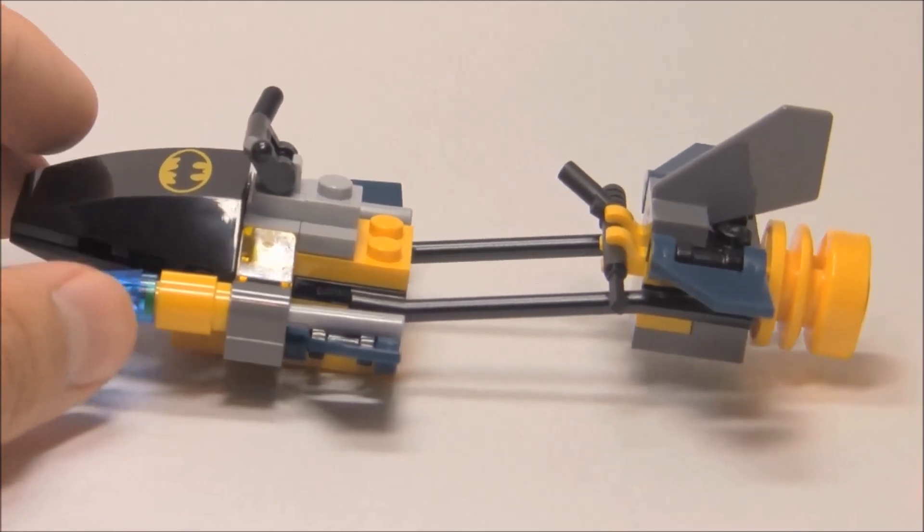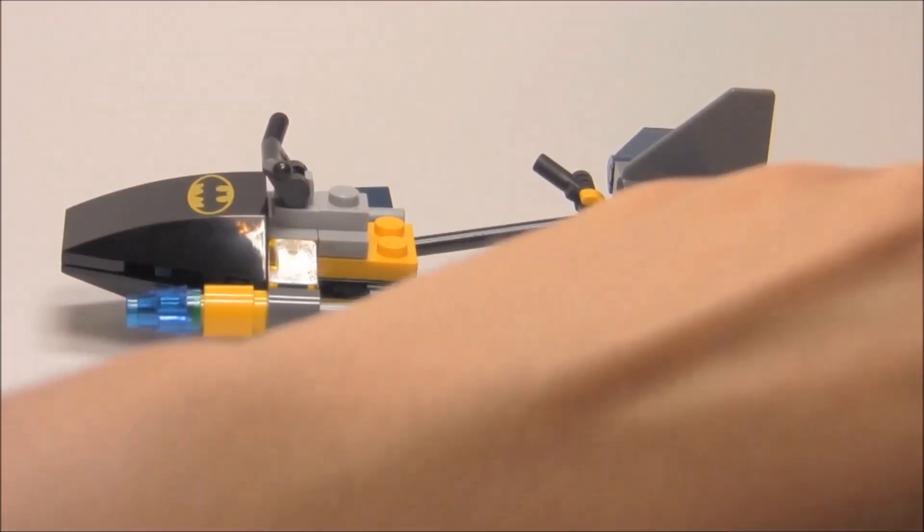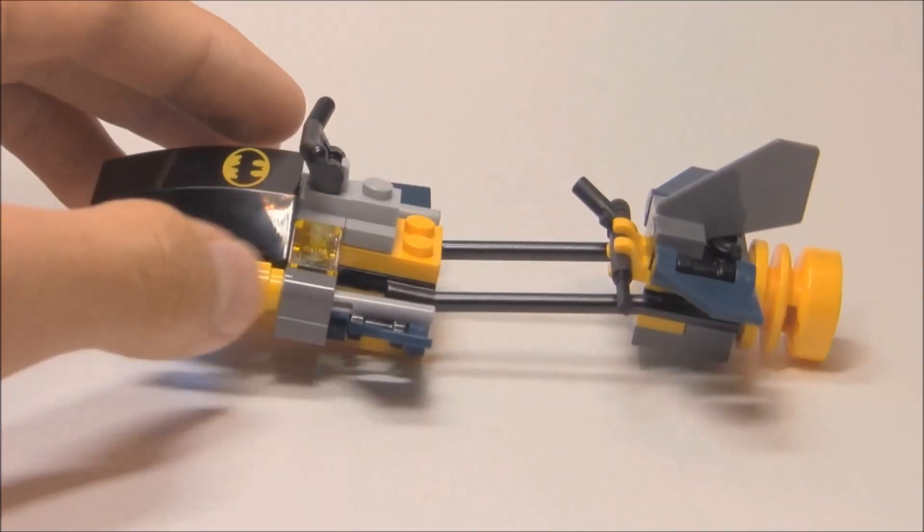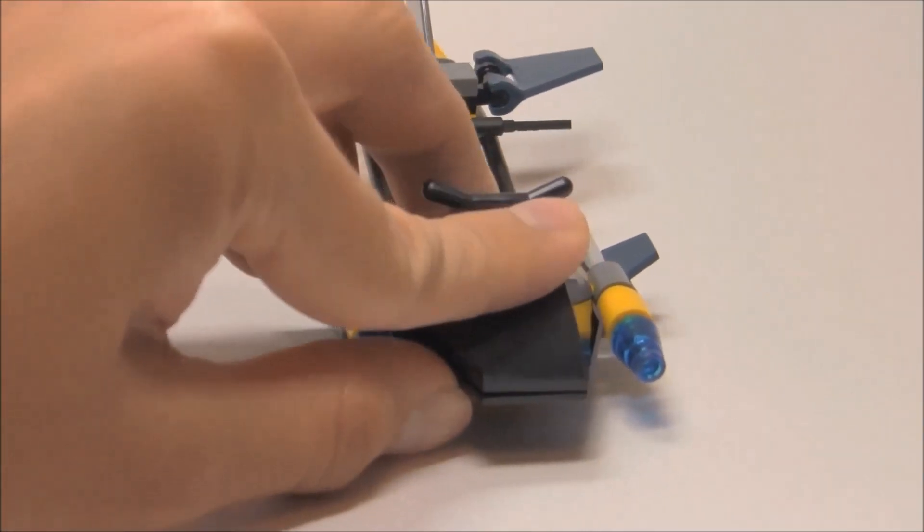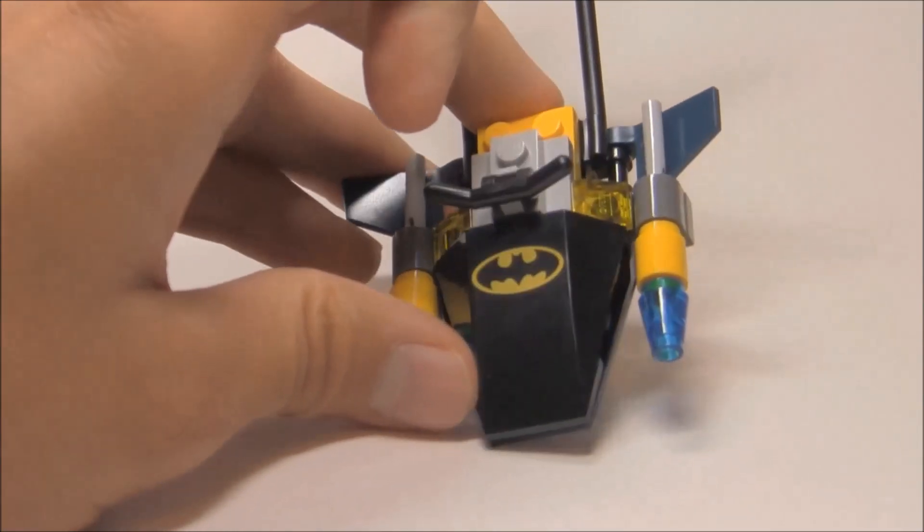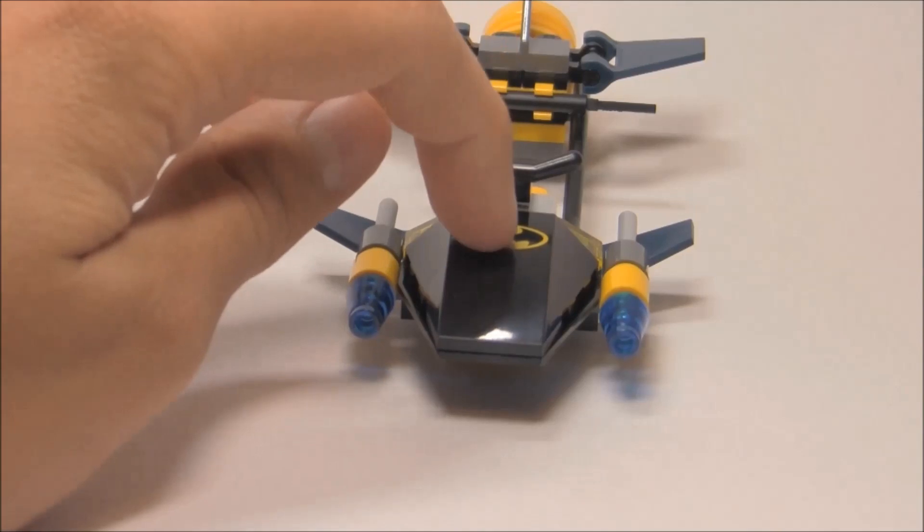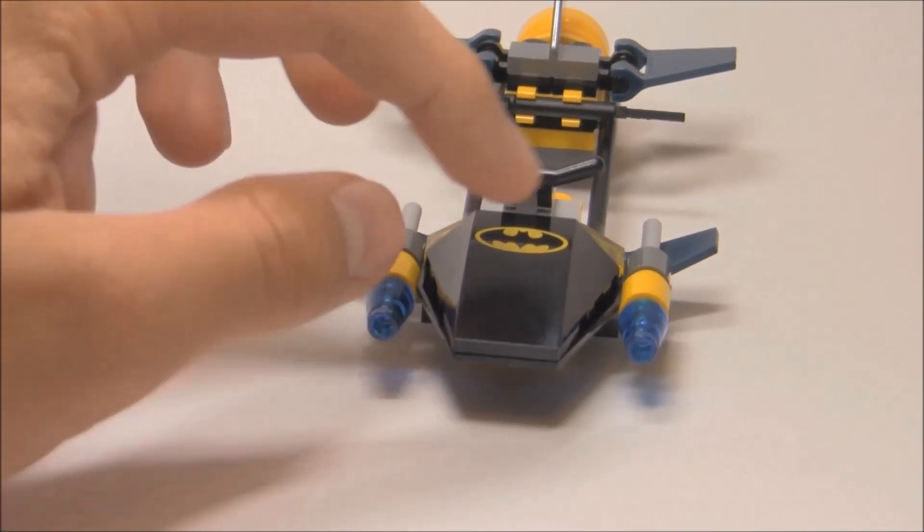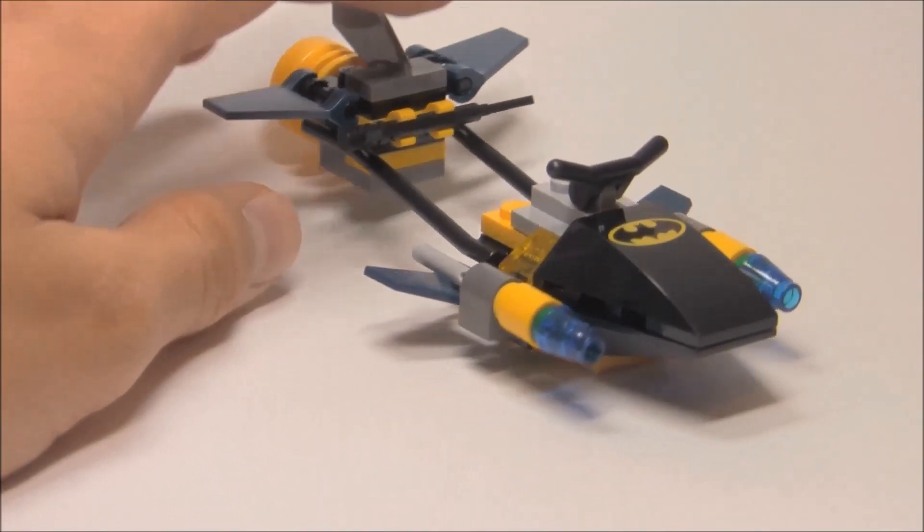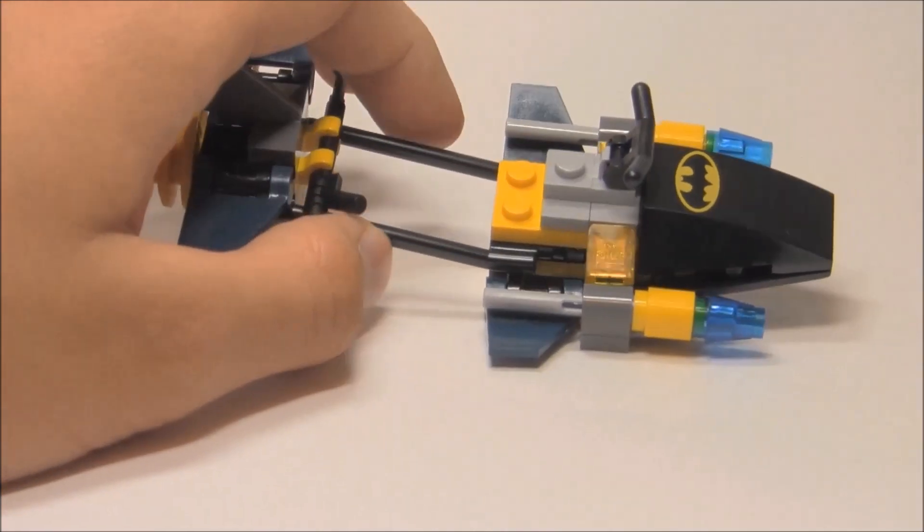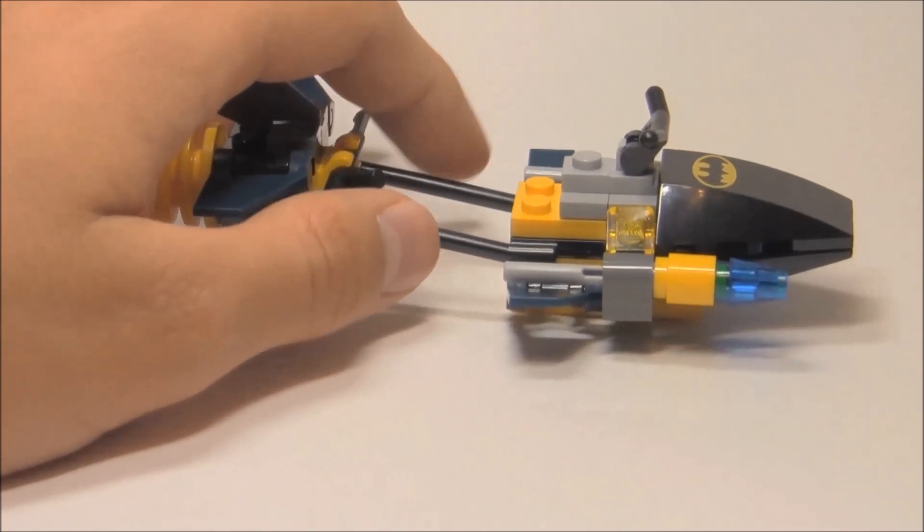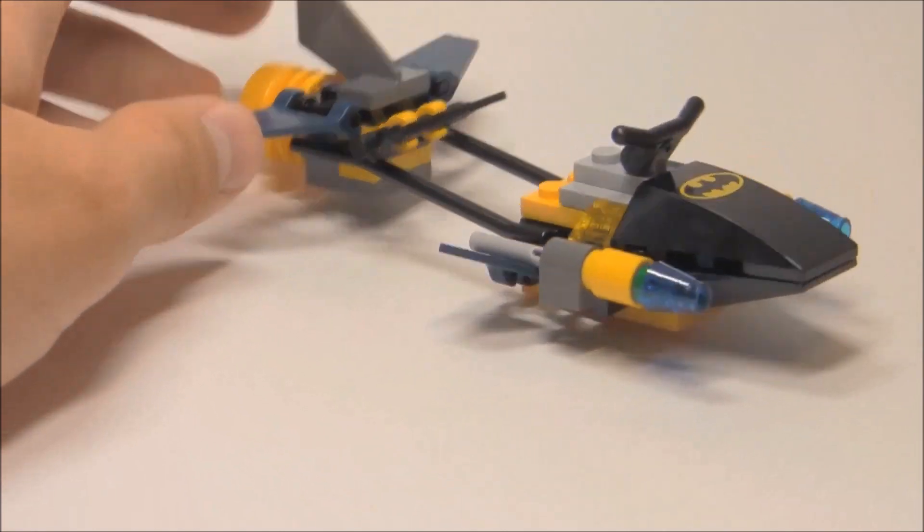Batman's vehicle is this little bat scuba jet. It's not the best build but it's one of the better Batman vehicles. I like how they have this printed piece which only comes in this set, which is awesome. This piece in black is also quite rare, only comes in a stealth shell and this set. Another exclusive piece.